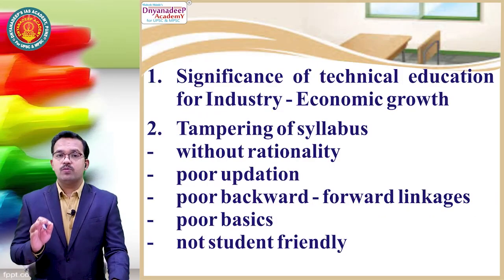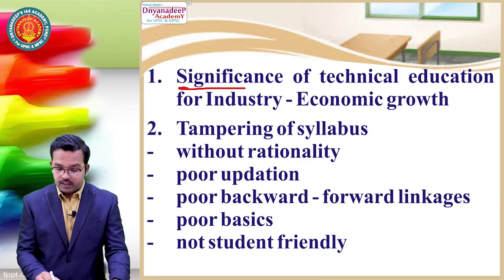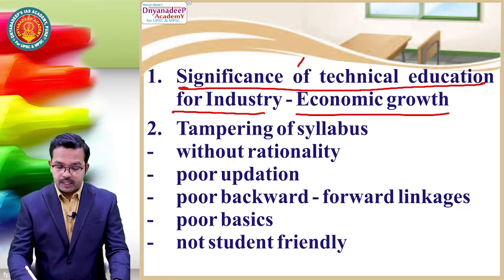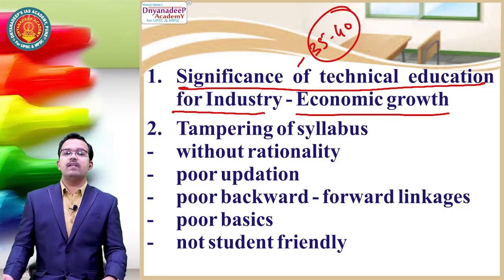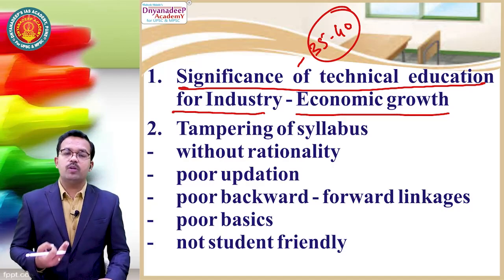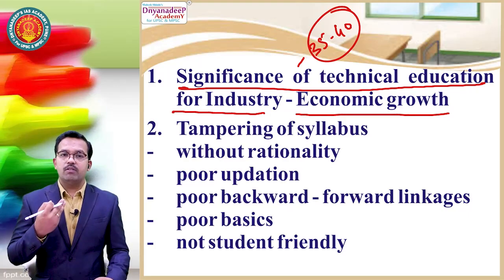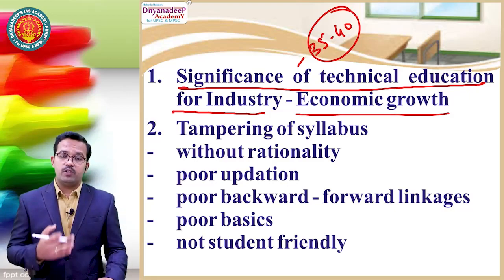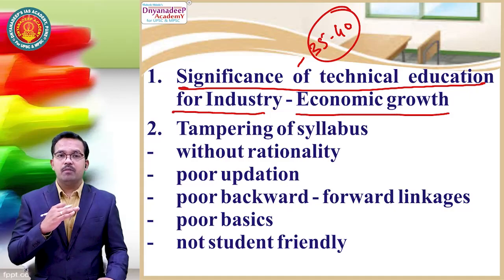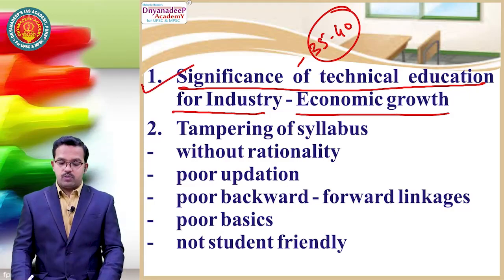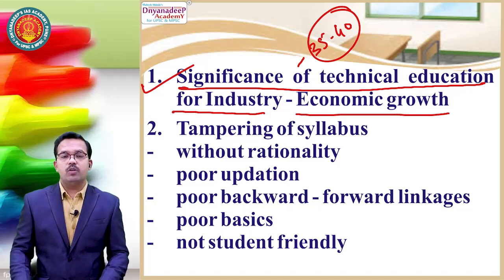First, you have to start your answer by explaining the significance of technical education for industry and economic growth. This point must be written in 35 to 40 words. You can give the example of Japan, China, Taiwan, or Germany, which was ravaged by two world wars but is still one of the largest economies — because of technical education. So first, the significance of technical education for industry and economic growth must be explained.